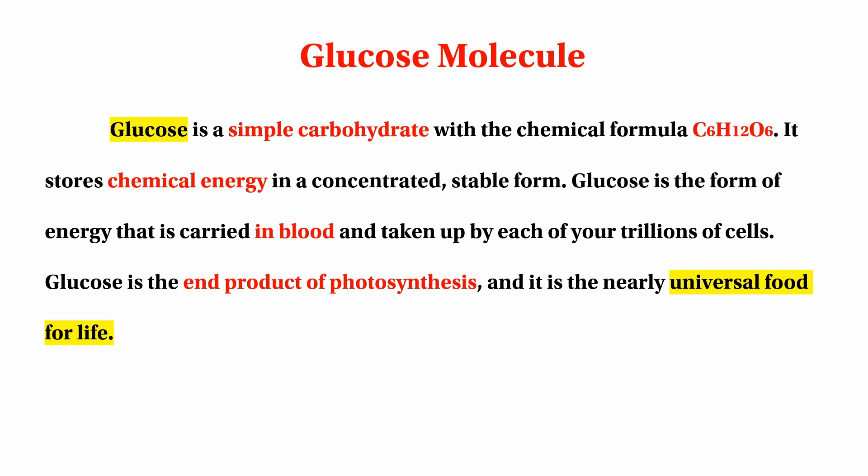Now let us know about heterotrophic nutrition. In this nutrition, there is a small molecule that can be used as glucose. It can be used as an acid, and it can be used as diffusable. It can be used as a glucose molecule — this is the food molecule.